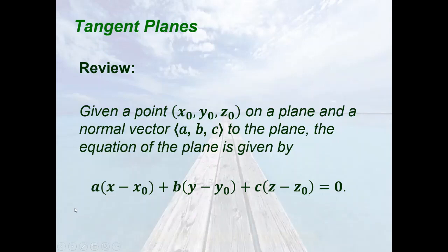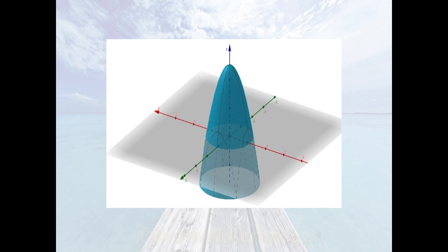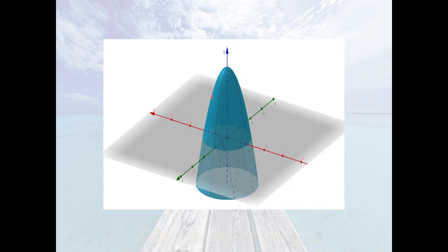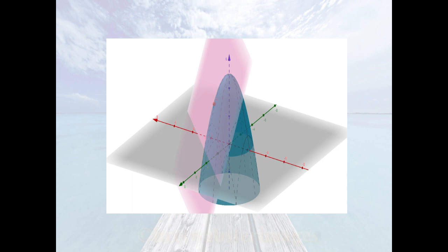We call this the standard equation of the plane. Consider this surface — GeoGebra was used to graph it — and consider a point on the surface, say (1, 1, 3). Consider the plane tangent to the given surface at that point. Our goal is to obtain the equation of this plane, and for that we will need a normal vector, which is obtained through the gradient of the function defining the surface.